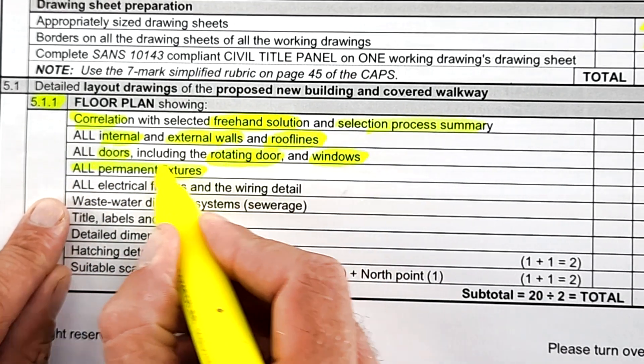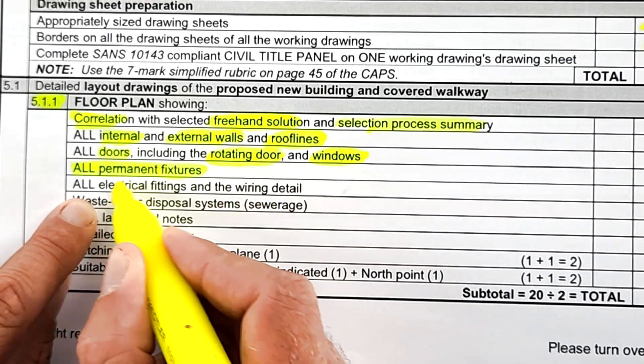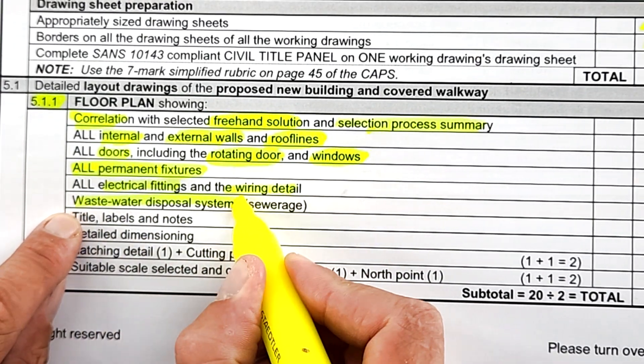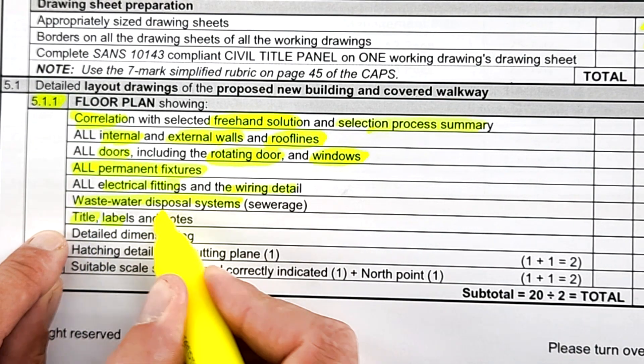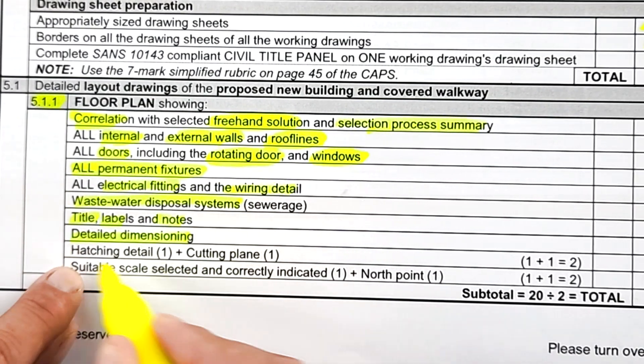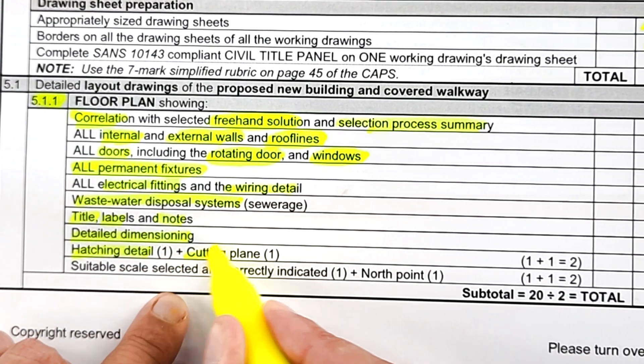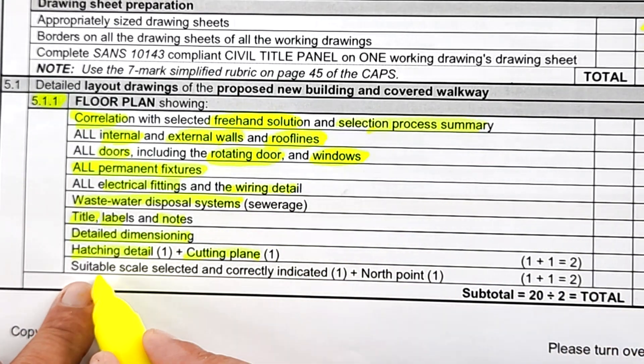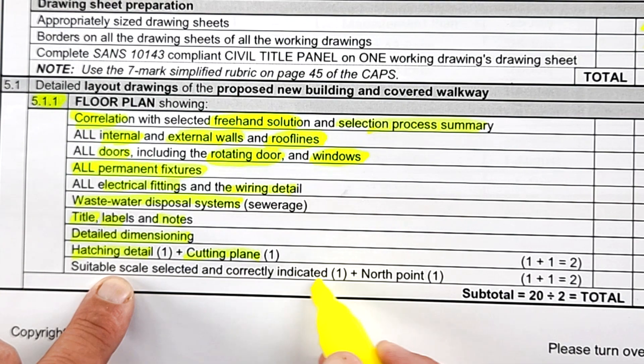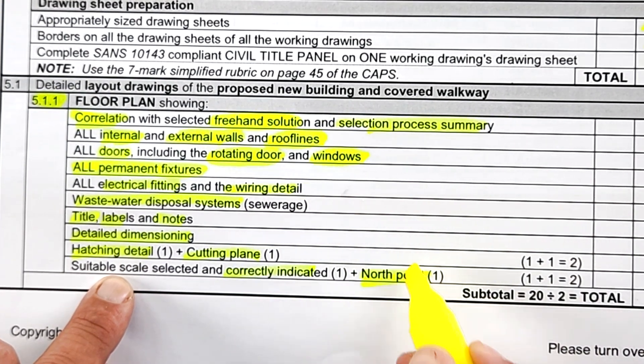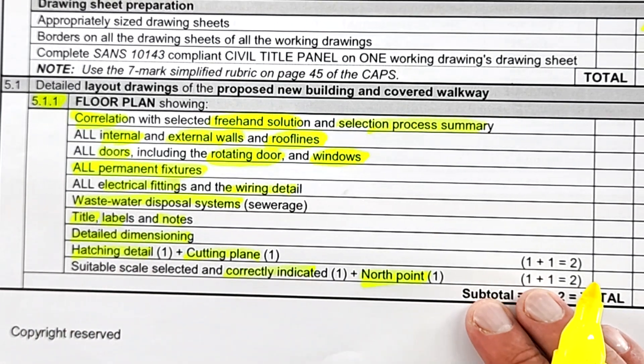All electrical fittings, wiring detail, wastewater disposal systems, your title labels and notes, detail dimensioning, your hatching—has that been done correctly? Cutting plane, is that included? And then did you use a suitable scale that was indicated, and the north point?